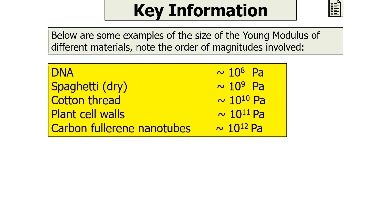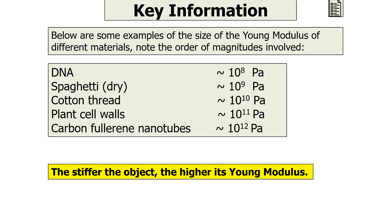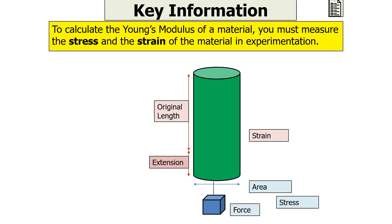Here are some examples of the Young Modulus for different materials — note the orders of magnitude involved. DNA is about 10⁸ Pa, dry spaghetti is 10⁹ Pa, cotton is 10¹⁰ Pa, cell walls of plants are 10¹¹ Pa, and carbon fullerene nanotubes are 10¹² Pa. The stiffer the object, the higher its Young Modulus.